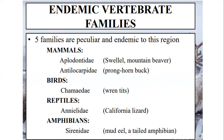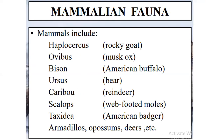Of the five endemic families, two are mammalian, one is avian, one is reptilian, and one is amphibian. The mammalian families are Aplodontidae, which includes the mountain beaver, and Antilocapridae, which includes the pronghorn. The reptilian family is Iguanidae, which includes the California lizard. The amphibian family is Sirenidae, which includes the mud eel, a tailed amphibian. These five families of vertebrates are endemic to the Nearctic region.